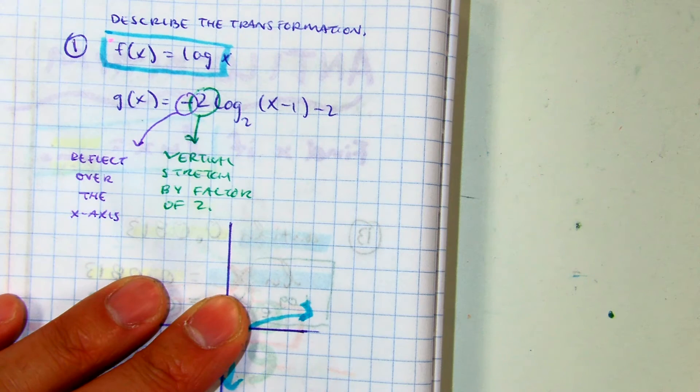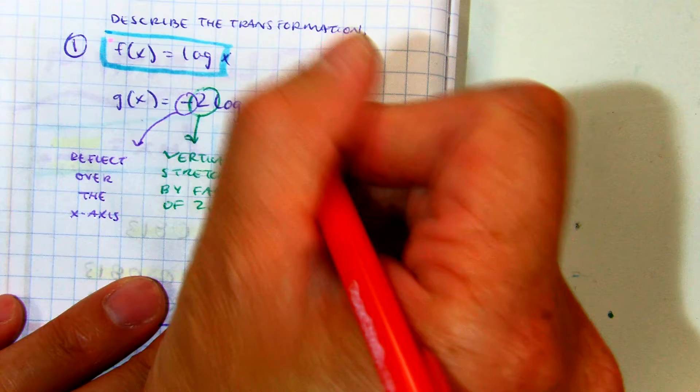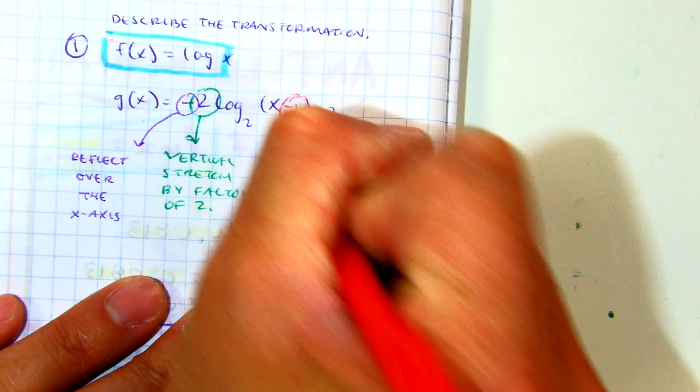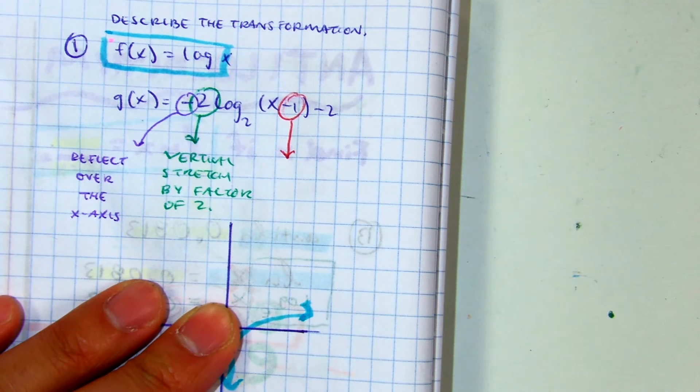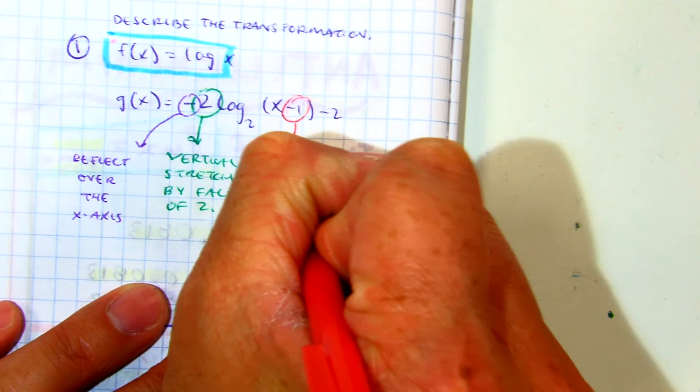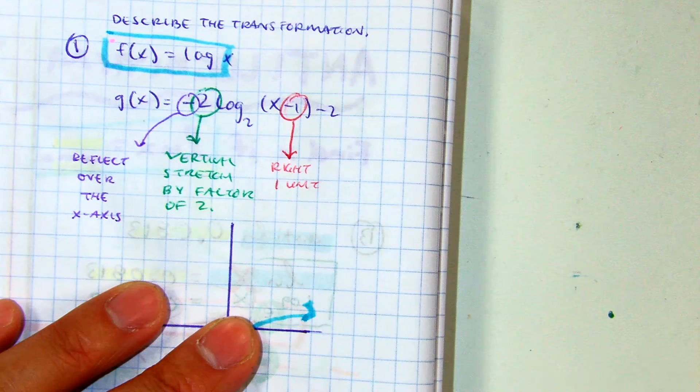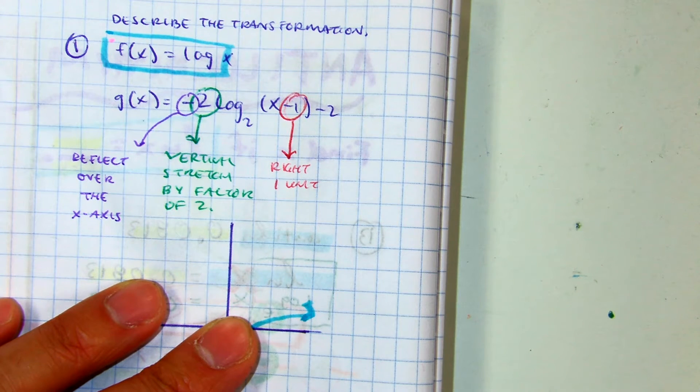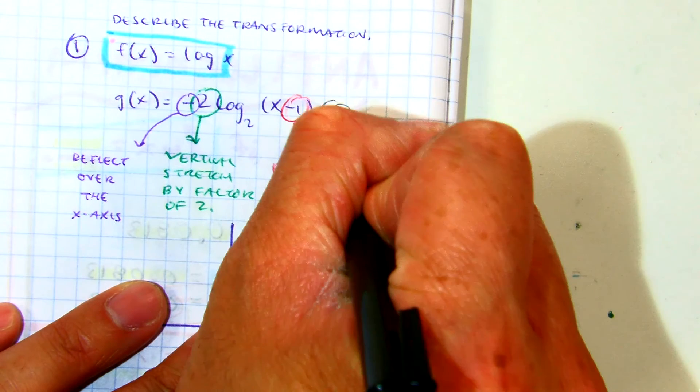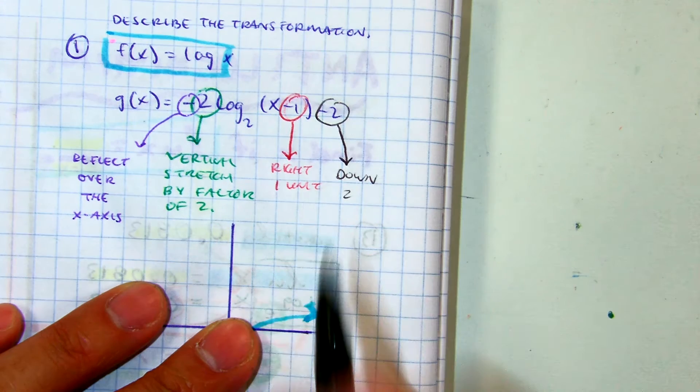Let's see. Where is that going? Right. Right. One unit. And then where is this going? Down. Down 2 units.